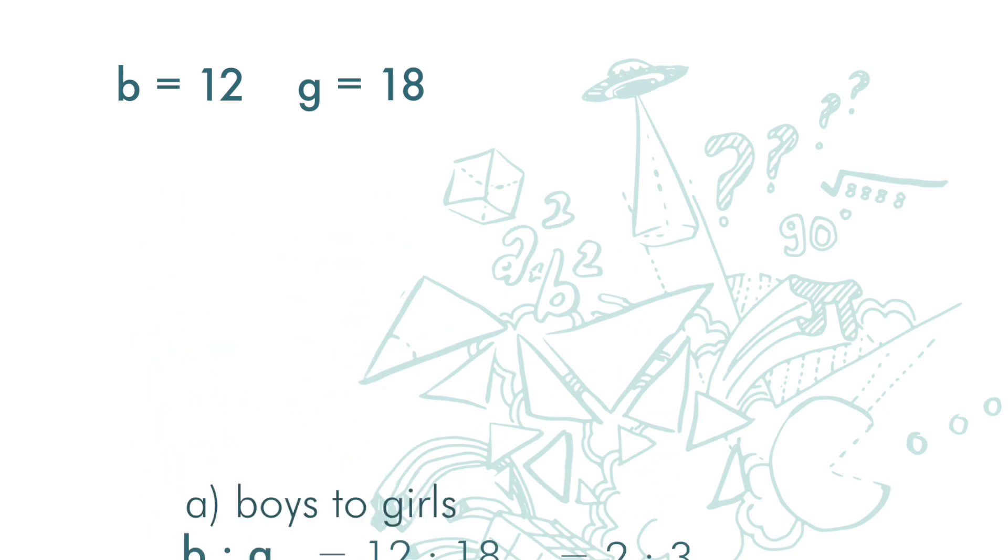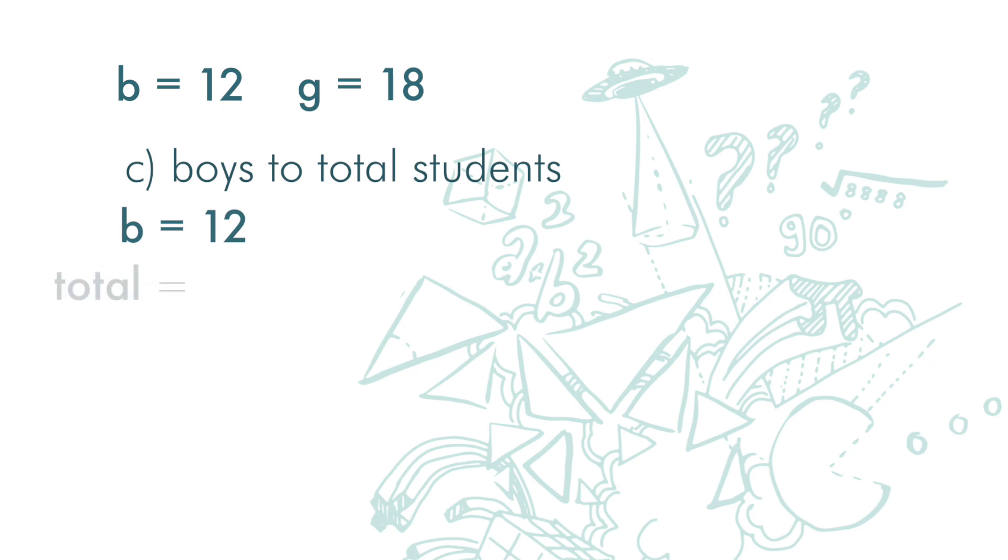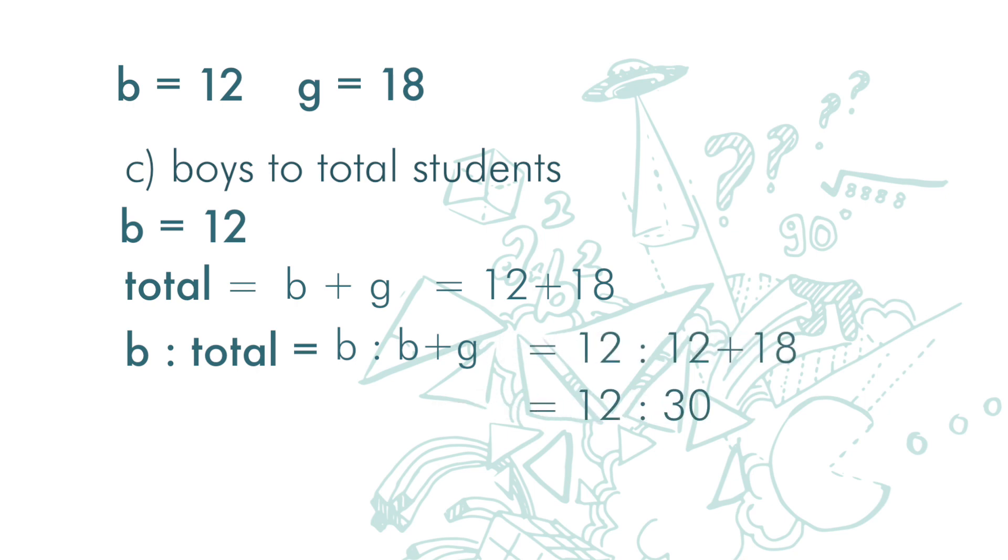How about the ratio of boys to total students? There are 12 boys. To get total students, we add up the boys and the girls, and there are 12 boys and 18 girls. So the ratio of boys to total students is boys to boys plus girls, which is 12 to 12 plus 18, and we get 12 to 30. We can simplify it to 2 to 5.